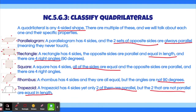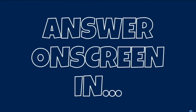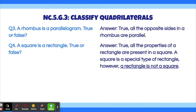These are a few of the different types of quadrilaterals, and they are pretty common, so try to remember these properties so you can identify them properly. Question 3: a rhombus is a parallelogram — true or false? Question 4: a square is a rectangle — true or false? I'll give you guys a few seconds to solve these. Feel free to pause the video if you need more time. The answer to both of these is true.